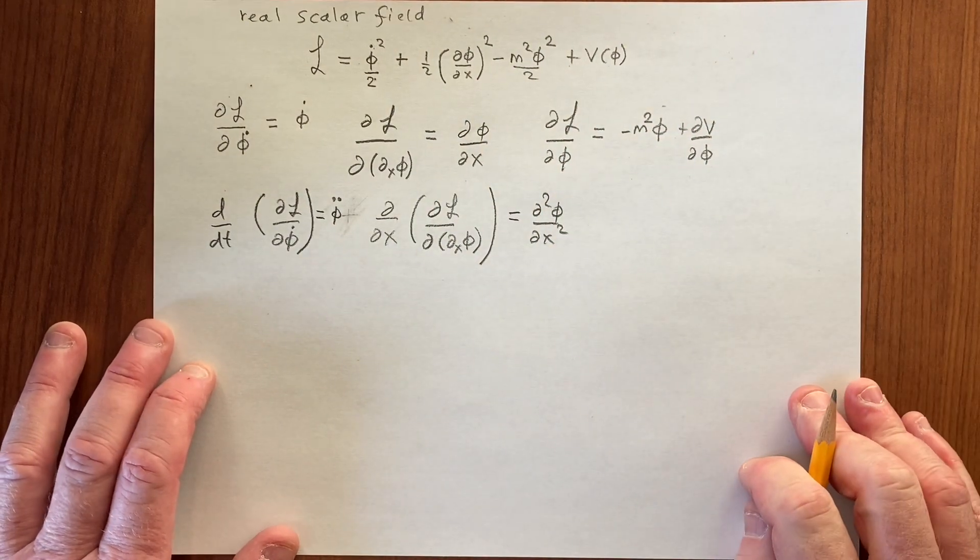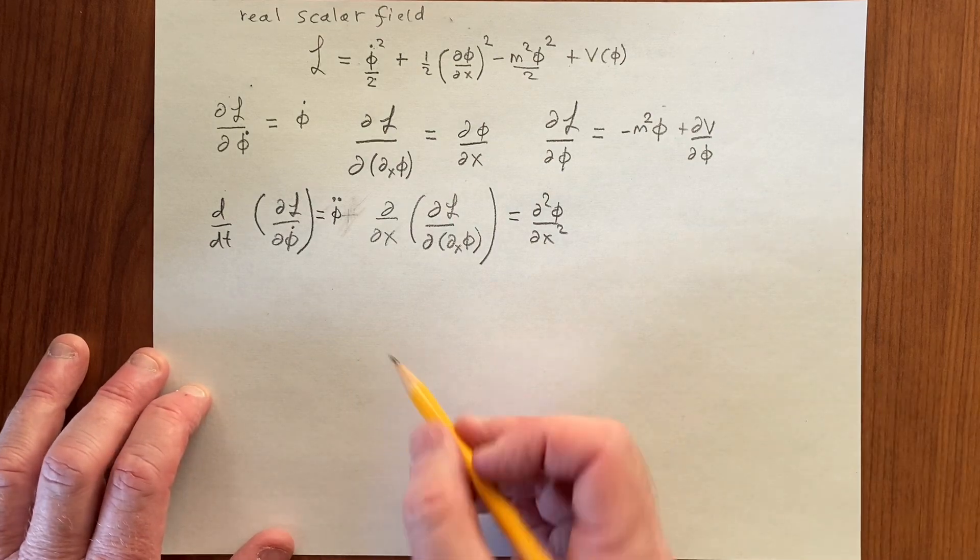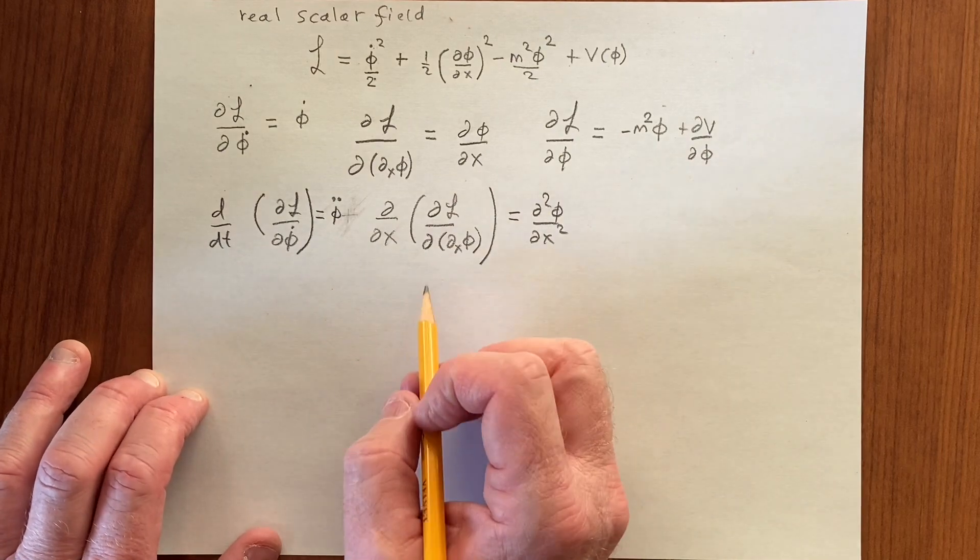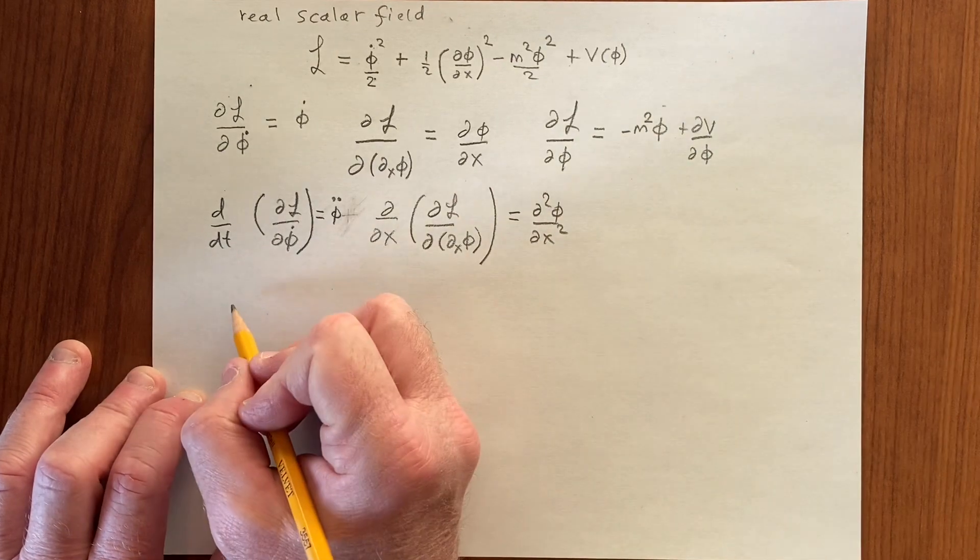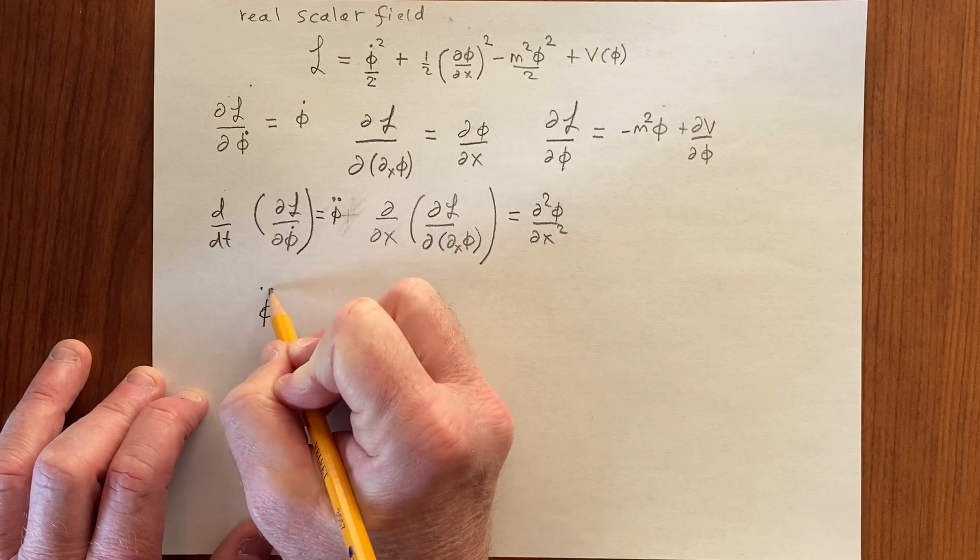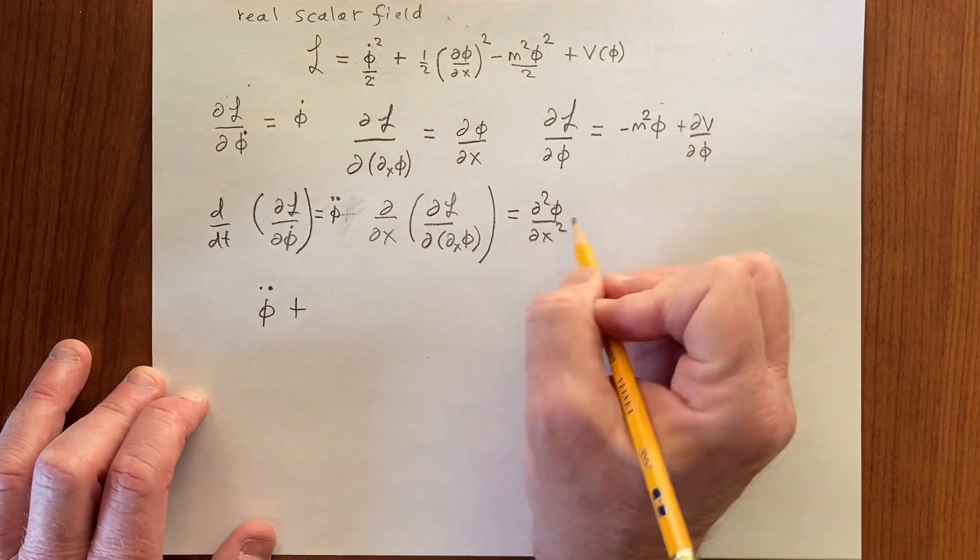And so if we're putting them all together, the Euler-Lagrange equations, let's not write that part. There we get, we have this, so we get phi double dot, we get this.